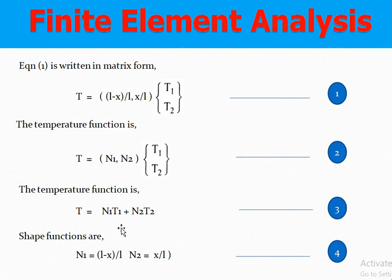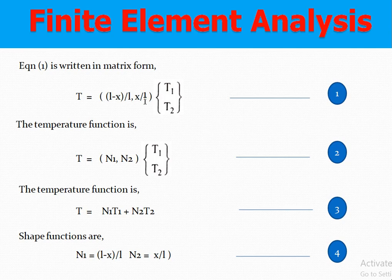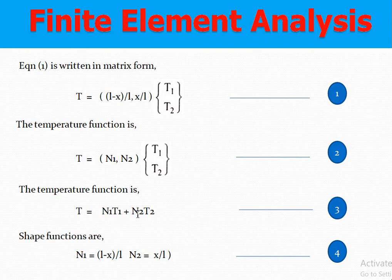The temperature function, seen as equation one in the last class, can be written as N1 times T1 plus N2 times T2, which equals T. This relates the local variable to the global variable. The shape function N1 is (L minus x) divided by L, and shape function N2 is x divided by L.